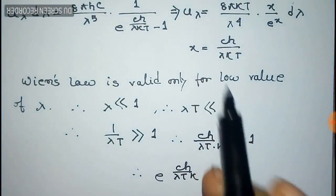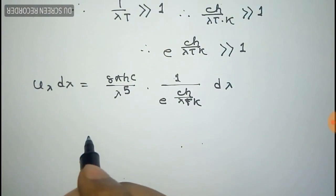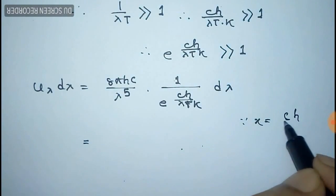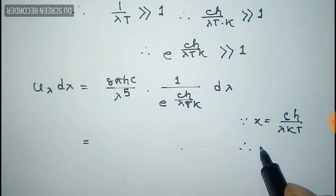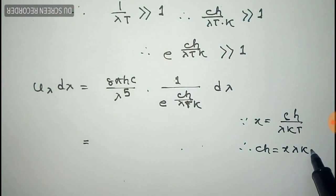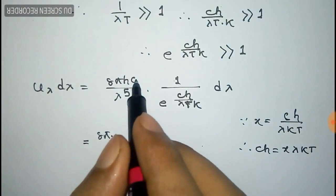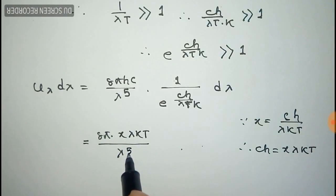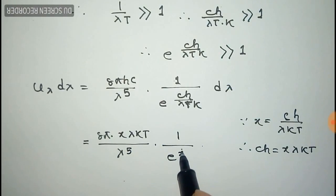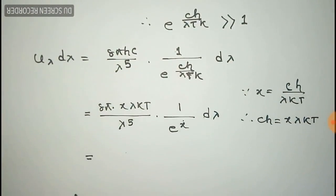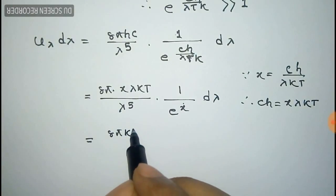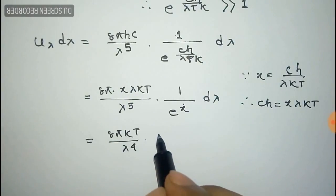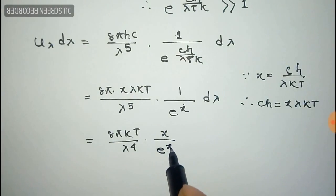Now we use the substitution x equal to hc/λkT, so hc equals xλkT. Substituting this value of hc into the expression and simplifying, we get 8πkT by λ to the power 4, times x by e to the power x, times dλ.